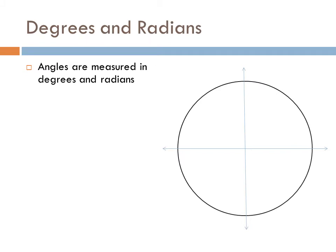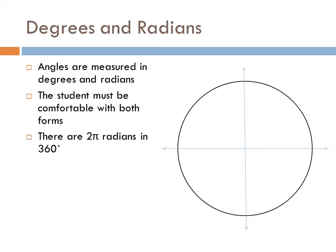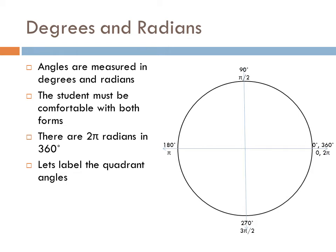Angles are measured in both degrees and radians, so we need to get familiar with both forms. There are two pi radians in 360 degrees. Let's label the quadrant angles: at the beginning we have zero. Then 90 degrees, which is pi over 2 in radians. Swinging over to 180 degrees, that is pi radians. Down to 270 degrees, that is 3 pi over 2 radians. And once you make the whole circle, that is 360 degrees or 2 pi. We have to memorize these four values.